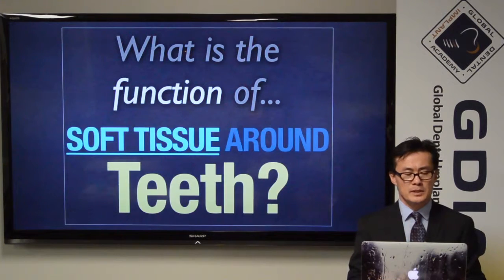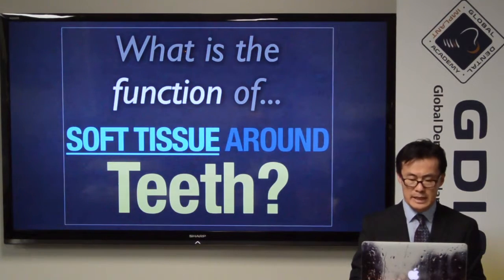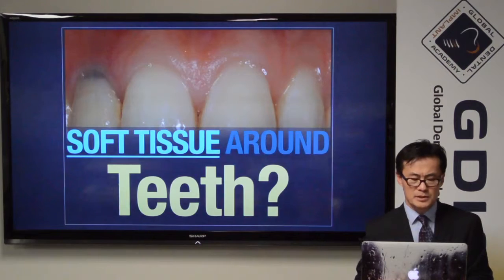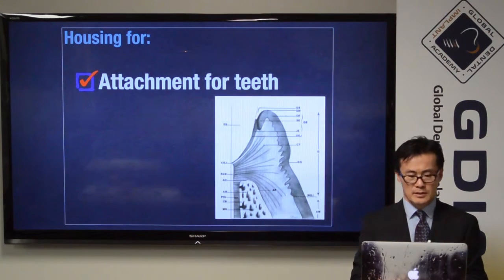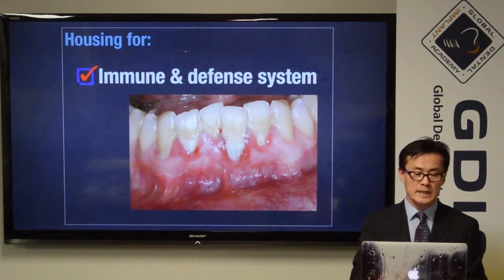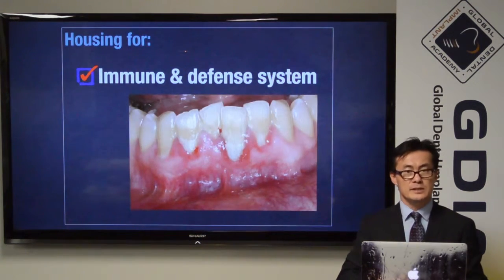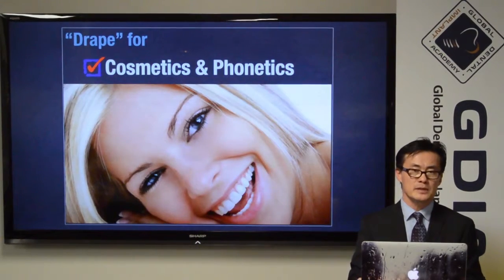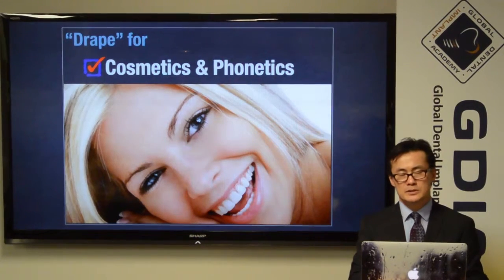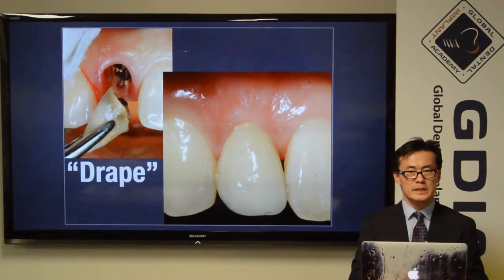What is the function of soft tissue? When we try to understand the implant field, we should start by understanding the soft tissue around natural teeth as a baseline. Soft tissue around teeth serves many functions. First and foremost, it is part of the apparatus for attachment of teeth. Within that complex structure, there is an immune and defense system vital to resisting periodontal assaults and other infections and inflammations. It is also a drape — the outermost layer of the structure — providing beauty and cosmetic aspects of teeth and surrounding structures.